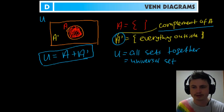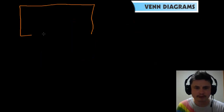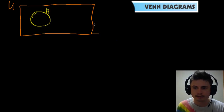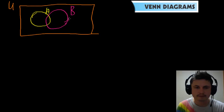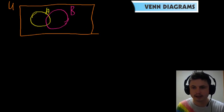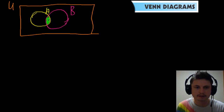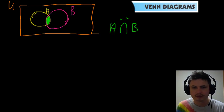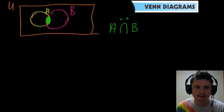Now let's do an example where there are two different sets inside the universal set. Here's universal set U, and inside it we have two circles: this one is A and this one is B. They're actually intersecting, so there's a bit of intersection going on. I'm going to highlight the intersection in green — the notation is written as A with an upside-down U for B. This is the intersection of A and B — basically the numbers they have in common.